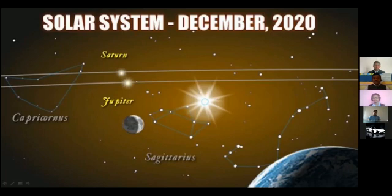We have discussed what is the great conjunction, what is a double planet, and what is going to happen on 21st December 2020. Now I am going to show one video.